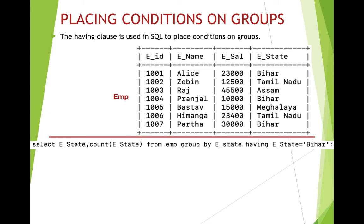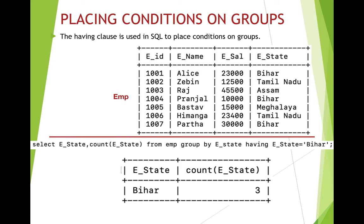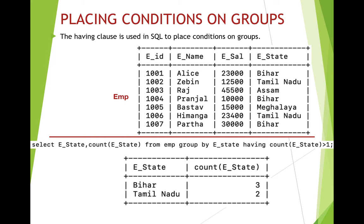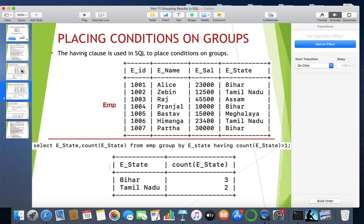For example: SELECT e_state, COUNT(e_state) FROM emp GROUP BY e_state HAVING e_state = 'Bihar' — this gives the count of employees residing in Bihar. For a different filter, to find states with more than one employee: SELECT e_state, COUNT(e_state) FROM emp GROUP BY e_state HAVING COUNT(e_state) > 1 — this returns Bihar and Tamil Nadu, as those are the states with more than one employee.